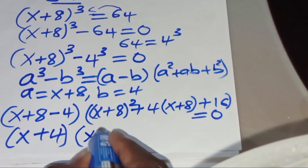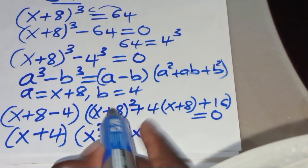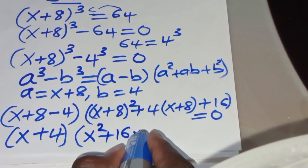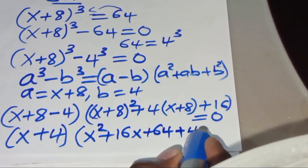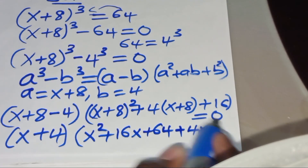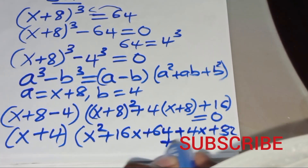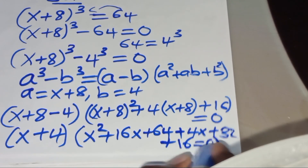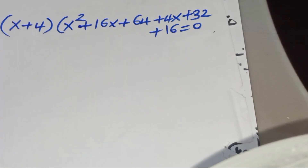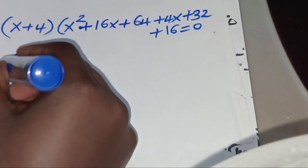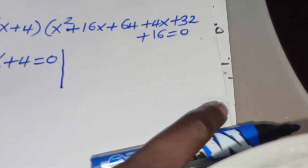Expanding (x + 8)² gives x² + 16x + 64. Combining all terms and simplifying, we get two parts: the first part is (x + 4) = 0, and the second part is a quadratic expression equal to zero.